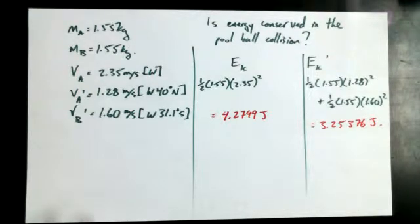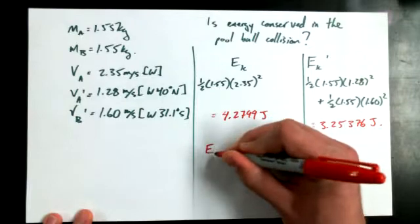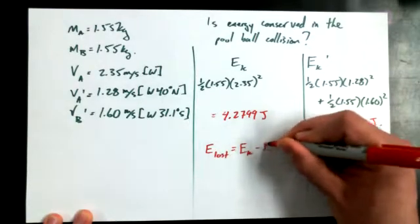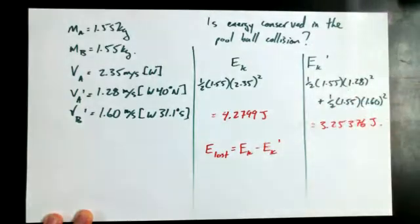So an inelastic collision, and we could even figure out how much energy was lost. How could I figure out how much energy was lost? Yeah. So I could say E lost is EK minus EK primed, and we could certainly do that, but we're running out of time. And could I figure out the energy efficiency here?